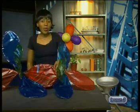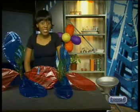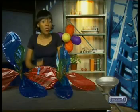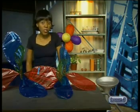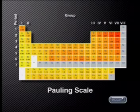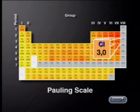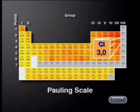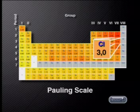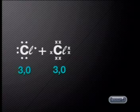Now let's see how Pauling's electronegativity numbers can be used to tell us about what is happening to the bond pair of electrons. From the periodic table, we see that a chlorine atom has an electronegativity number of 3.0. This is a high value on the scale and means that the chlorine atom will try to pull the bond pair towards itself, but in the chlorine molecule, we have two chlorine atoms that both have the same electronegativity number.